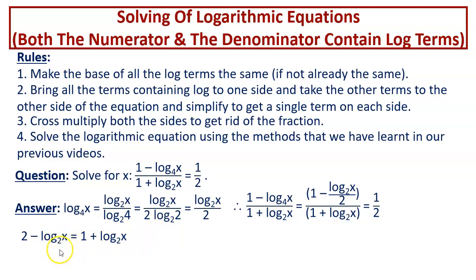Now, if we add log of x to the base 2 to both sides and add negative 1 to both sides, we get this. 2 minus 1 and log of x to the base 2 plus log of x to the base 2. 2 minus 1 is 1 and this is like a plus a. Don't get confused when you see log of x to the base 2 plus log of x to the base 2. What is this equal to?